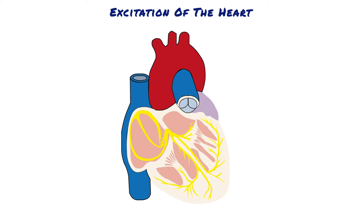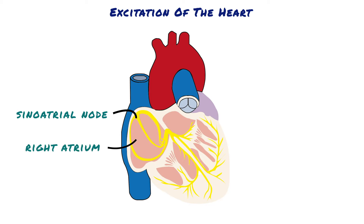Excitation of the heart: the cellular mechanism that initiates the cardiac action potential lies in the sinoatrial node. It is located in the superior posterolateral wall of the right atrium, immediately below and slightly lateral to the opening of the superior vena cava. The sinus nodal fibres connect directly with the atrial muscle fibres, so that any action potential that begins in the sinus node spreads immediately into the atrial muscle wall.